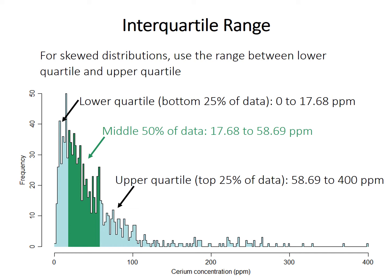So any data set can be divided into four quartiles. The lower 25%, the second 25%, the third 25%, and the upper 25%. And so the interquartile range is just the range spanned by the middle 50% of those data points, which is the dark green shading in this histogram here. So it extends from the lower quartile, 25% of the data points are smaller than that, to the upper quartile, where 25% are larger. So in this example, the lower quartile is between 0 and 17.7 or so. Upper quartile is about 59 to 400-ish. So the interquartile range is about 58.7 minus 17.7, or 41 parts per million in this case.